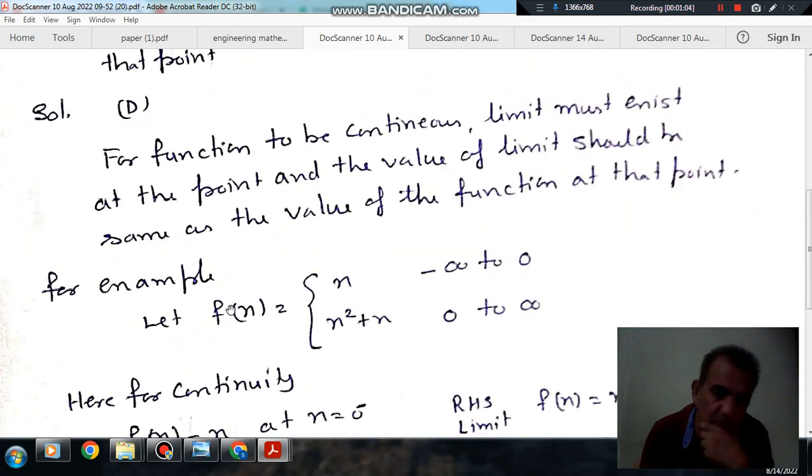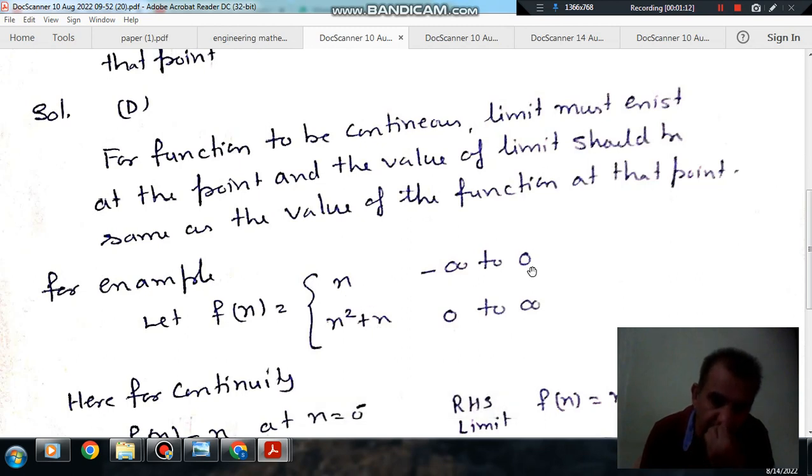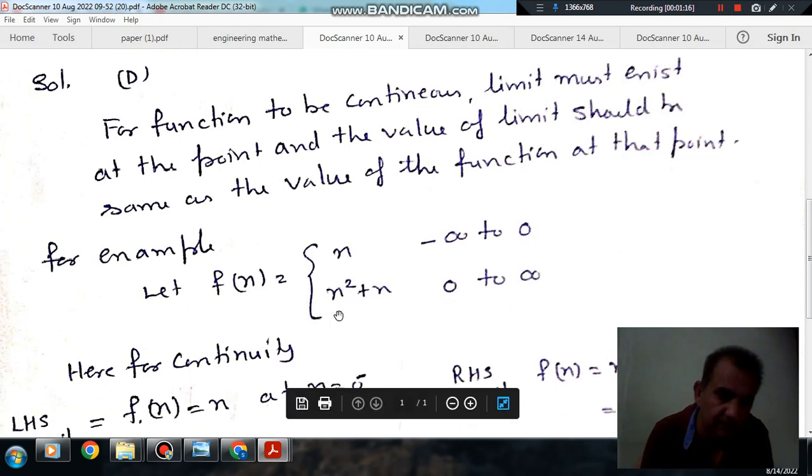So, this is correct. Suppose function f(x) is equal to x for minus infinity to 0, and x squared plus x for 0 to infinity.